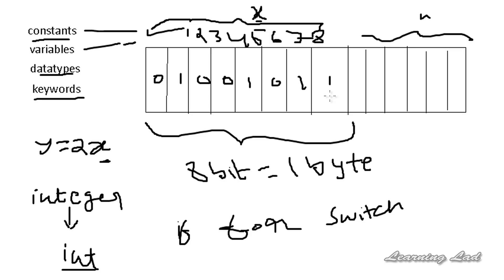So that's it — this is some information on constants, variables, data types, and keywords. I know my drawing is a bit ugly, so I'm really sorry for that. Thank you for watching, don't forget to subscribe, you can like my Facebook page at facebook.com/learninglad, and if you have any doubts or suggestions please leave a comment. I'll see you in the next tutorial. Bye.